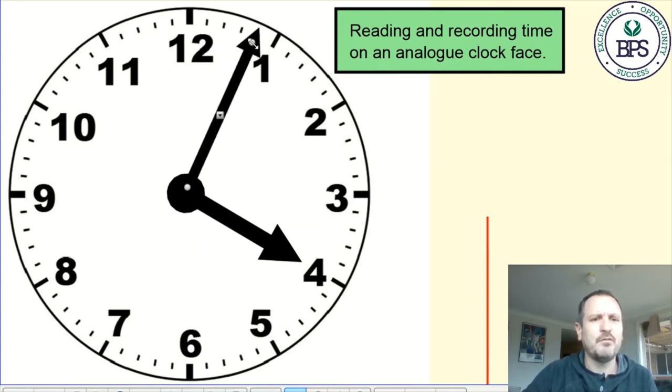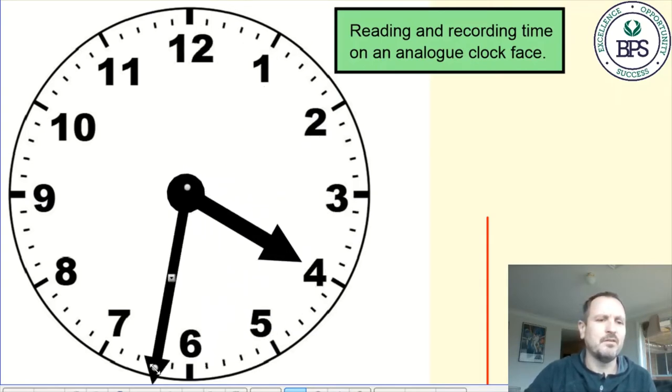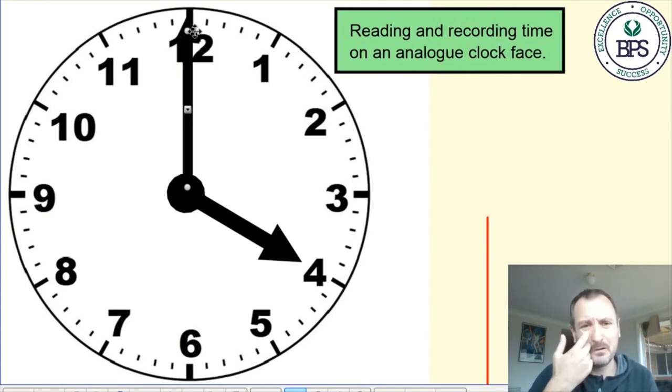This hand will move around one of those tiny spaces every one minute, or it'll move around between each of the larger numbers every five minutes, which means that it will do an entire lap of the clock once every hour. Currently my clock face is showing four o'clock.